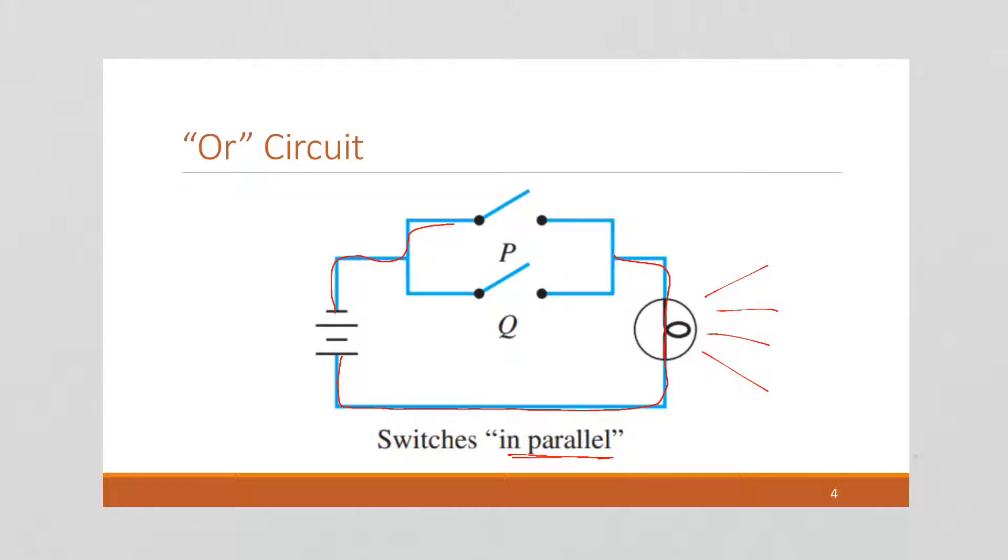Similarly, if we had Q closed and not P, the power can come around that way and we have a circuit. It doesn't hurt if both of them are closed, but it isn't really necessary. This is an OR circuit. This is how we would create a logical OR by having our switches in parallel.